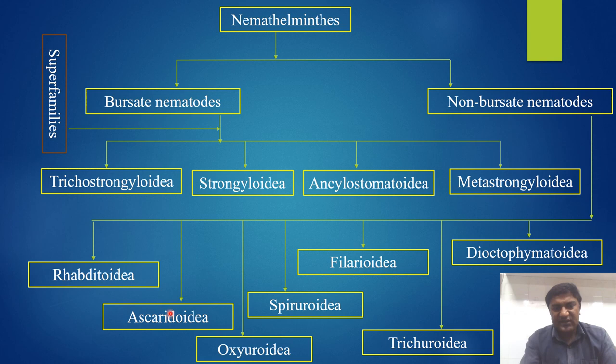The non-bursate nematodes have the following superfamilies: number one is Rhabditoidea, Ascaridoidea, Oxyuroidea, Spiruroidea, Filarioidea, Trichuroidea, and Dioctophymatoidea.